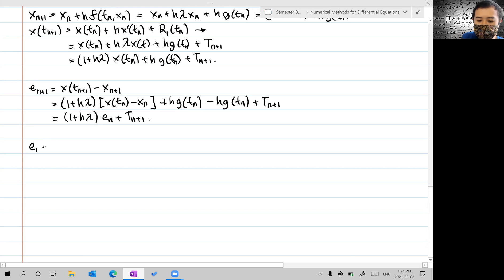If we start from e_1 = x(t_1) - x_1, then e_2 = (1 + hλ)e_1 + τ_2 and so on. We arrive at e_n = (1 + hλ)e_{n-1} + τ_n.